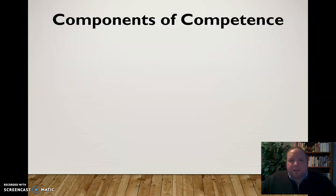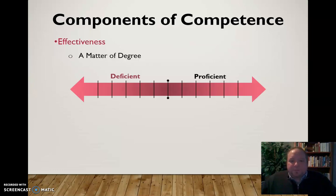The first component of communication competence is effectiveness. How effective are you in this given context, in this particular situation or environment? That's going to change from situation to situation — it's really a matter of degree. We can be deficient in some areas and situations, and more proficient in others.